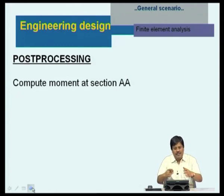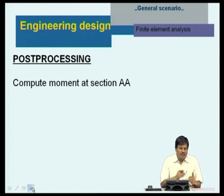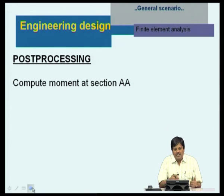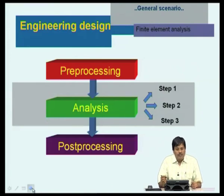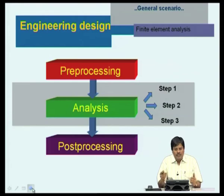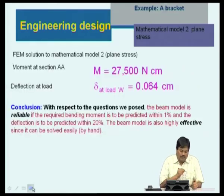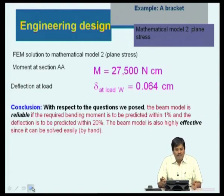Once we get this, we obtain the primary parameter — in the case of a bracket, the deformation — and then we post-process the deformation to get subsequent quantities like stresses, moments, and shear forces. The process involves three steps: first is preprocessing where we create the mesh using small elements and nodes, then we do the analysis, and finally we post-process the results. If we apply this sophisticated model to find the moment, we get a moment that is essentially the same as predicted by the beam, but the deflection is at the higher end.